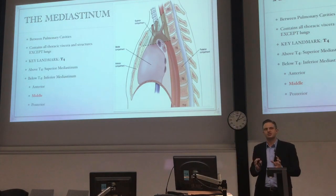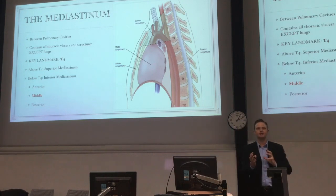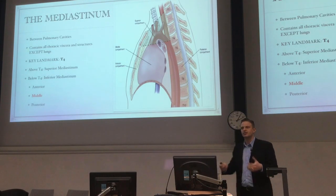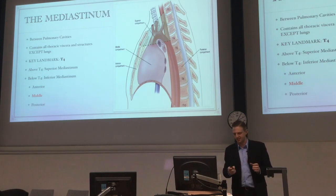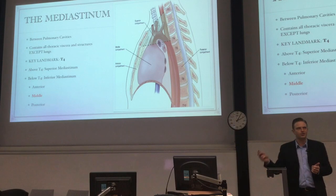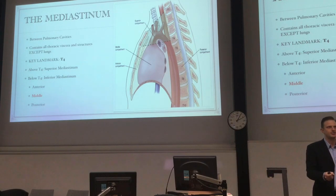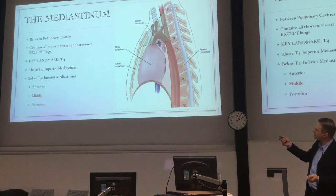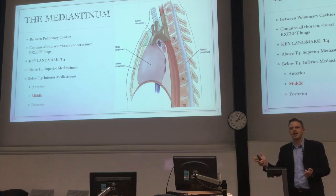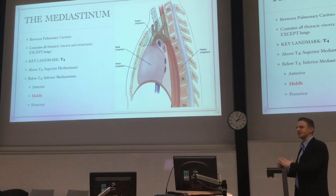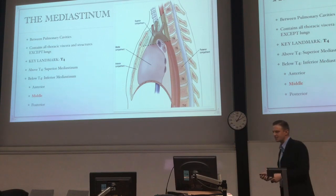The mediastinum is not a fixed structure — it's mobile, because you've got the lungs going in and out either side, the heart beating around, and the esophagus behind it taking food. For convenience, we divide it into the superior and inferior mediastinum, with the landmark being T4 — above T4 it's superior, below it's inferior. We then divide the inferior mediastinum into three compartments based on the pericardium: inside the pericardium is the middle mediastinum, anterior to it is the anterior mediastinum, and posterior to it is the posterior mediastinum.